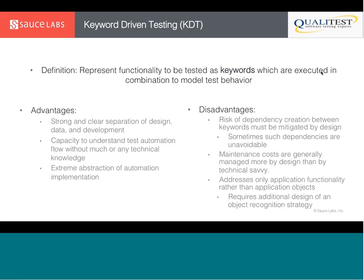What we get from KDT: there's a very strong and clear separation of design, data, and development. Keywords are designed to model business rules and business logic, and are developed in a way that they can consume different types of data, giving you that clear separation between the three. This is very important because KDT is largely a design-driven approach rather than a functionality-driven approach.